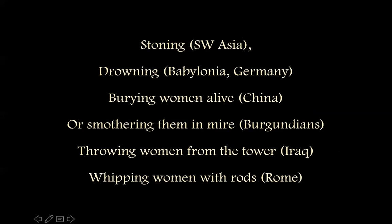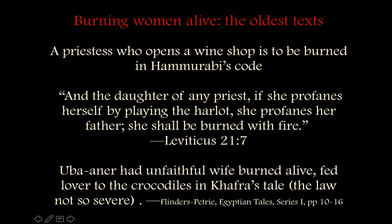Tacitus talks about this being done in Germania for unchaste women, for prostitutes. Throwing women from the tower — this is in ancient Babylonia or Akkadia. Whipping women. And here are our oldest texts in which women are to be burned alive as a special form of terror. For Hammurabi, priestesses were to be burned if they opened a wine shop, with intimations that prostitution was going on in that establishment. So the purity law is really brought to bear here.